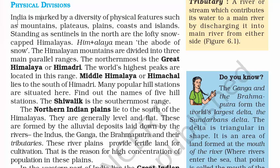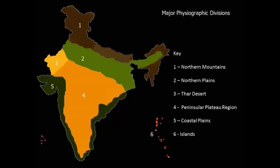India is marked by a diversity of physical features such as mountains, plateaus, plains, coasts, and islands. Looking at the map: on top we have the northern mountains, then the northern plains. On the west side we have the desert — Rajasthan, also called the Thar desert. In the middle, the orangish area is the peninsular plateau, where you see the Deccan plateau, Satpura range, and Aravalli range. Then there are coastal plains around Gujarat down to Kerala and from Tamil Nadu to Odisha. Finally we have the islands — Andaman and Nicobar Islands and Lakshadweep Islands.